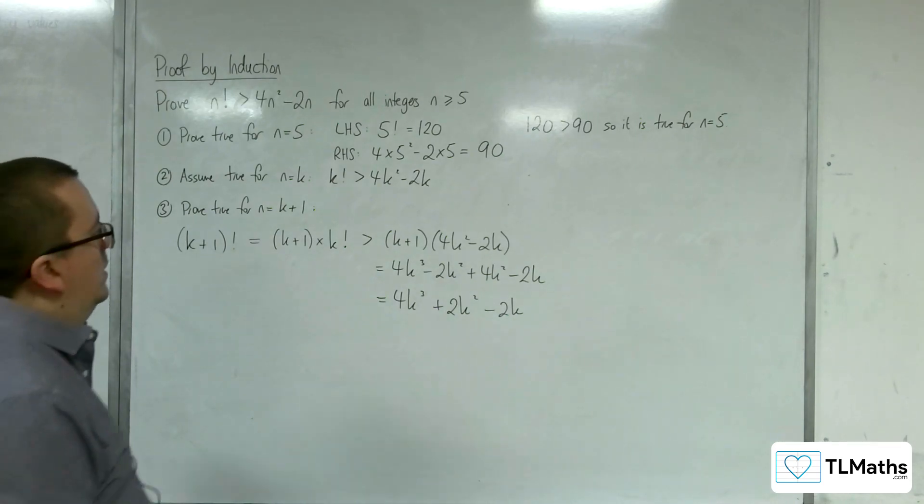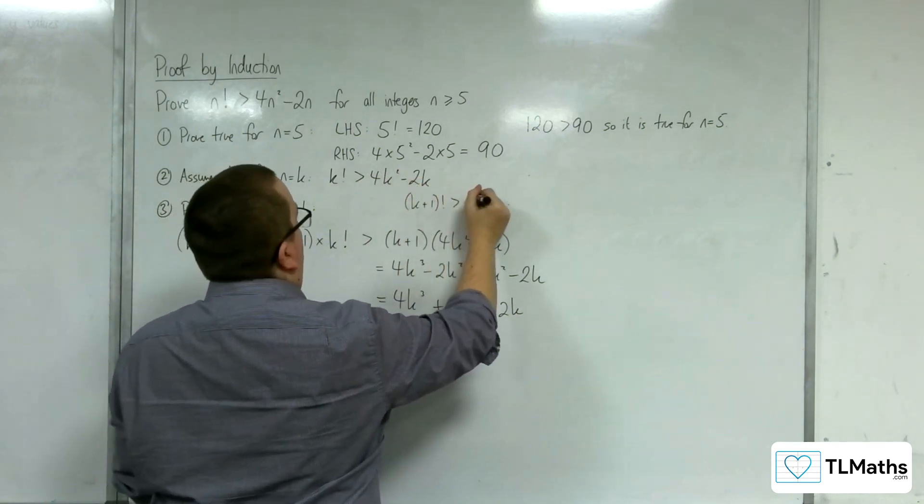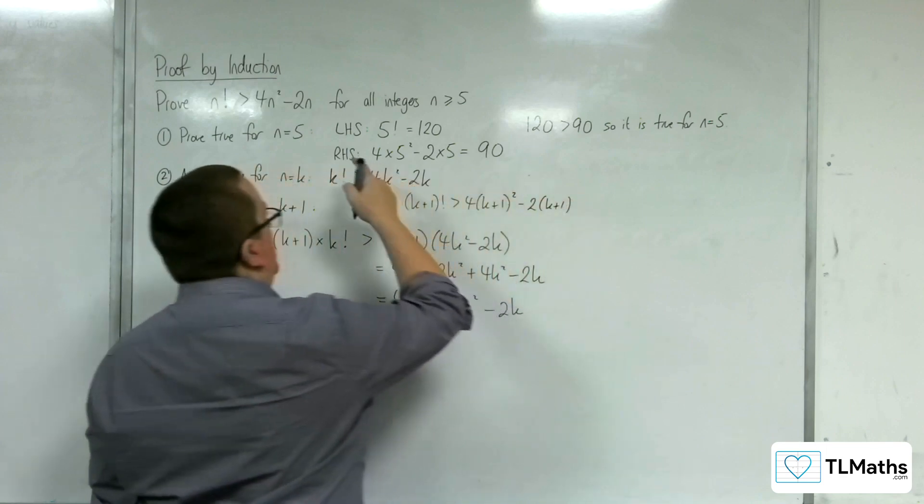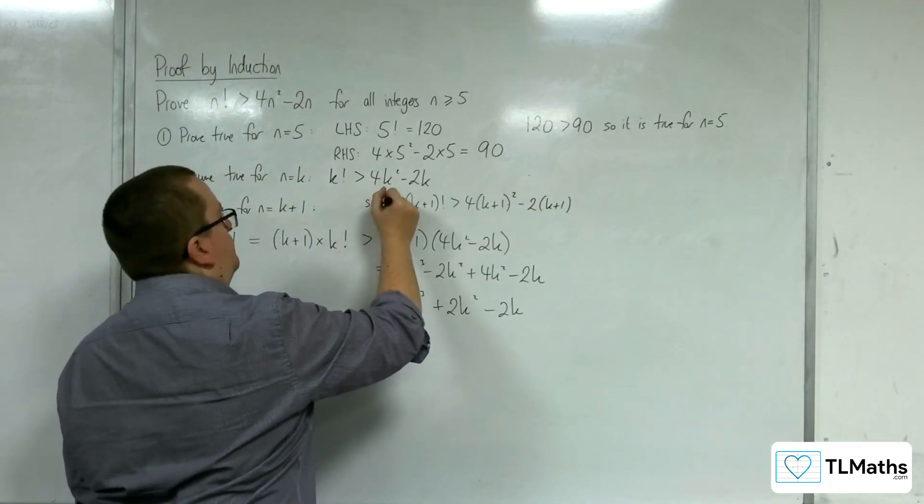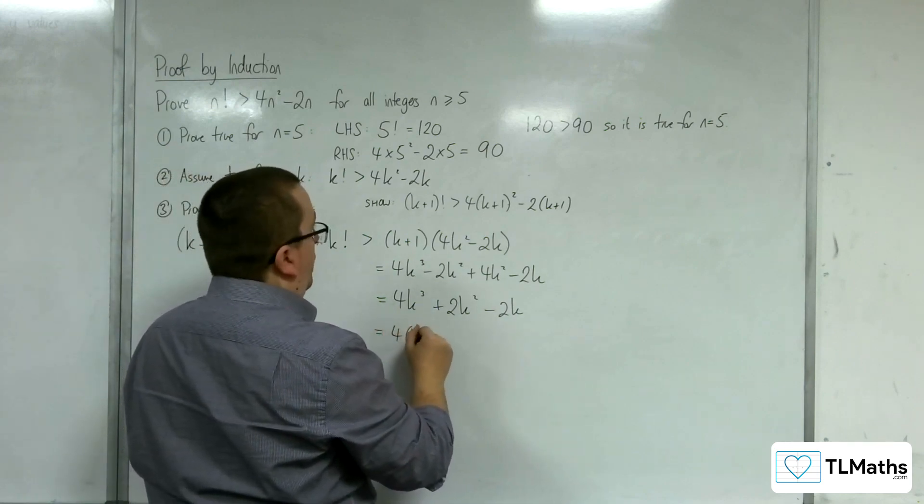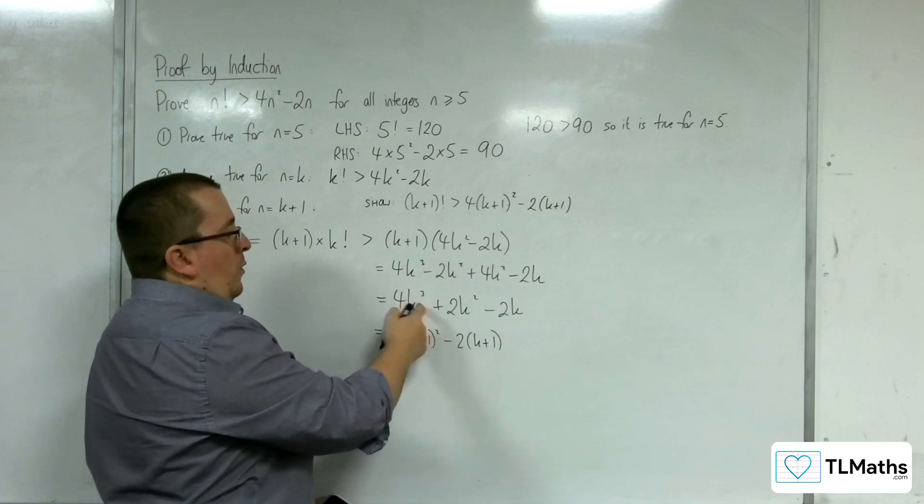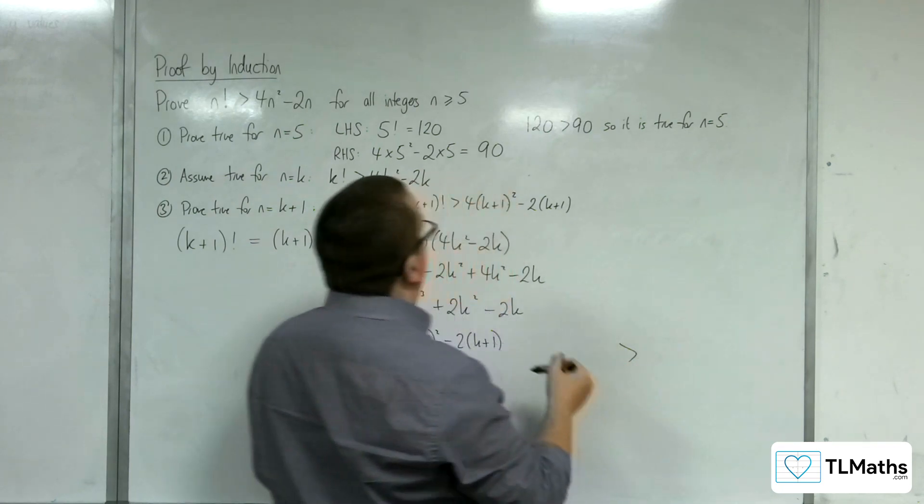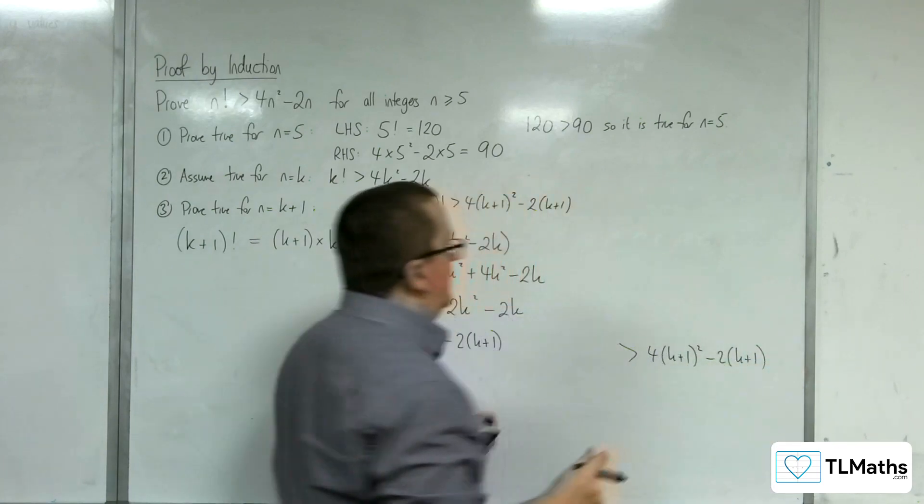Now preferably what I want to get to is that k plus 1 factorial is greater than 4 lots of k plus 1 squared, rather, take away 2 lots of k plus 1. So substituting each of the n's for k plus 1. OK, so this is what we want to show.